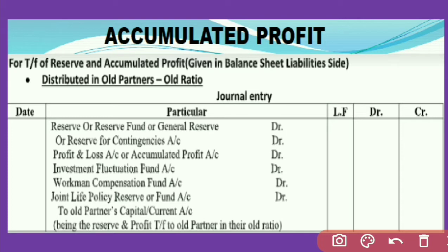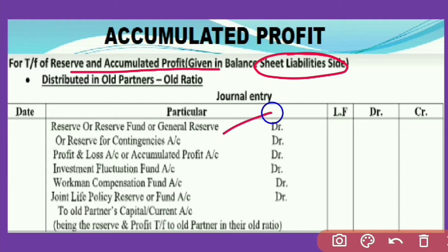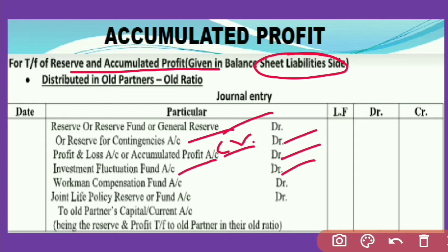When there are reserves in the balance sheet — and all reserves are given on the liability side of the balance sheet — for the distribution of these reserves among old partners, all reserves are debited in the books of account: reserve or reserve fund account debit, general reserve account debit, reserve for contingencies debit, profit and loss or accumulated profit — sometimes given as credit balance in the question — also debited. Investment fluctuation fund or reserve is also debited.